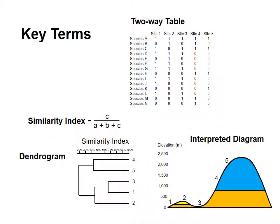I want to give you a few key terms before we start the example. We collect our data in a form called a two-way table. This table has data arranged in a specific way, which we'll examine later. A similarity index is a mathematical expression that lets us calculate the similarity of two places. This similarity is based on how many items they share and how many items are unique to each place.